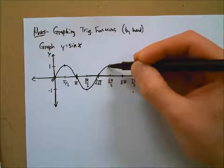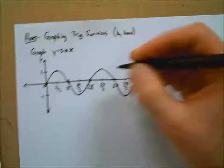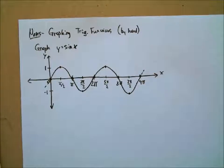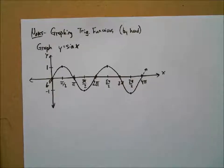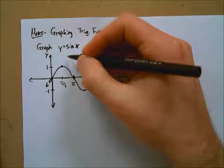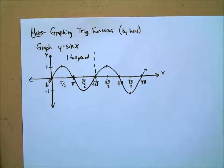And so it looks something like this. Of course, it would just continue on forever and ever — so we put an arrow on both sides to show that it extends forever. The domain for this function would be all real numbers. You can take the sine of any real number. So there's one full period, and another one right there.